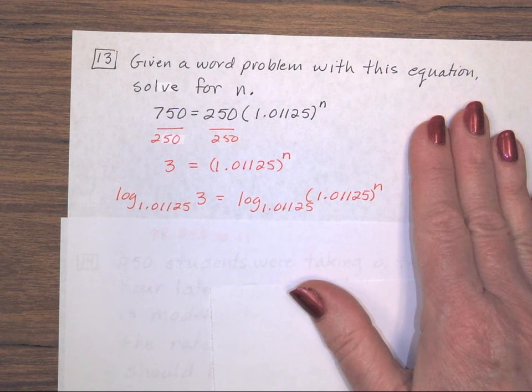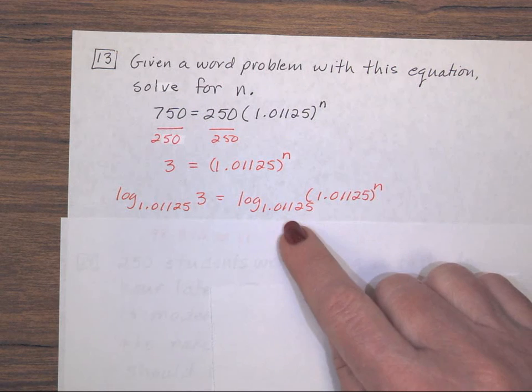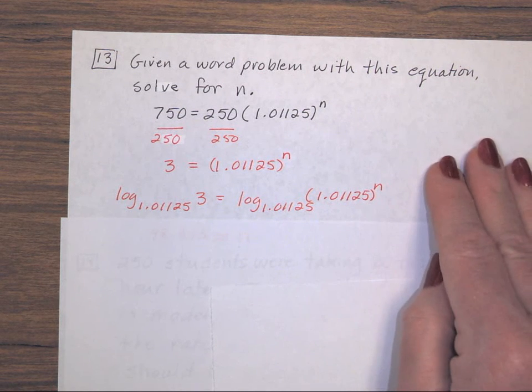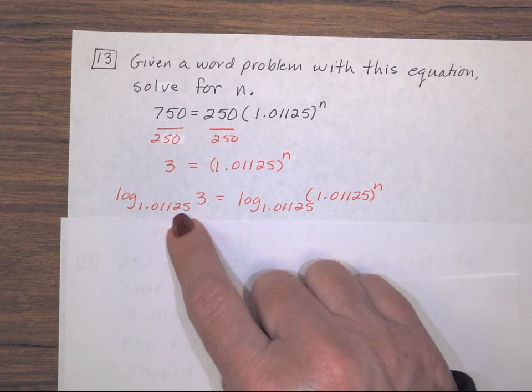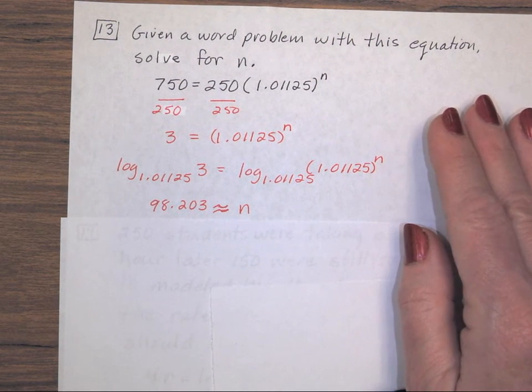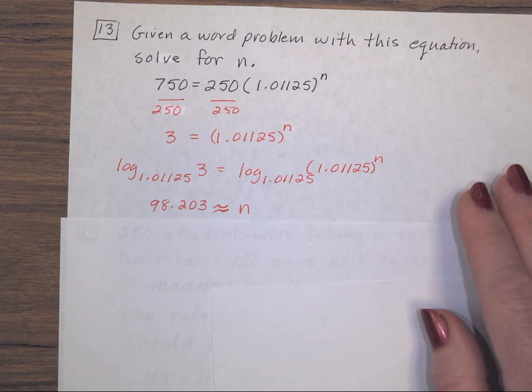On the right side, this cancels, leaving n by itself, and if you put this in your calculator, you will get approximately 98.203.